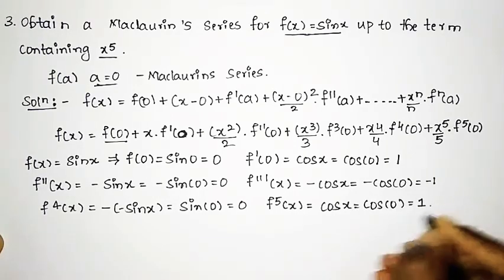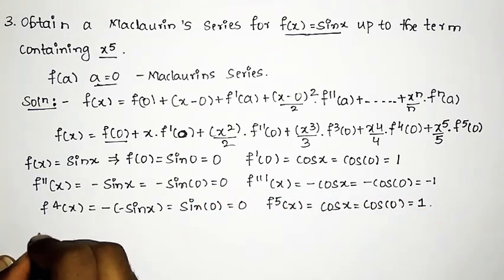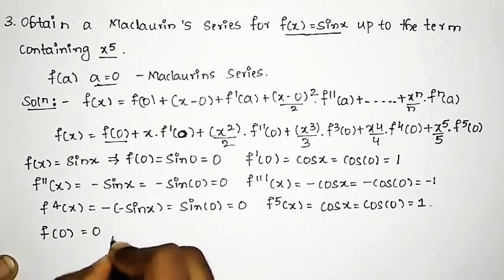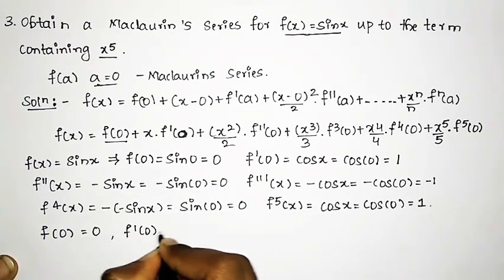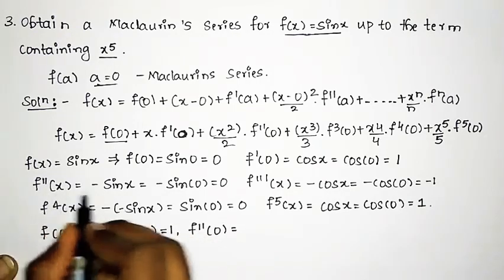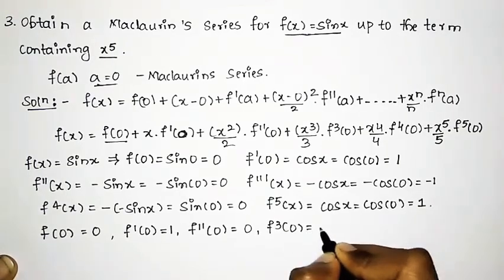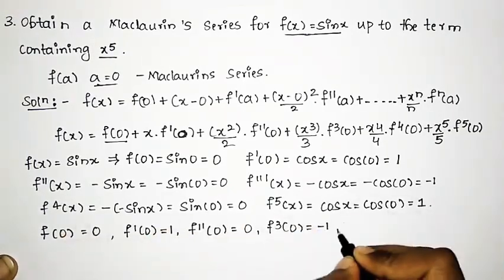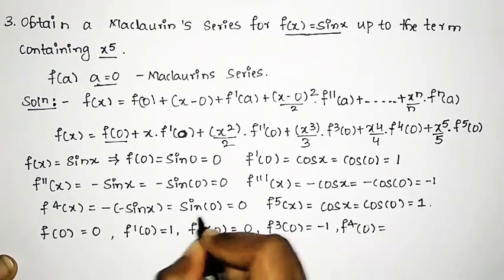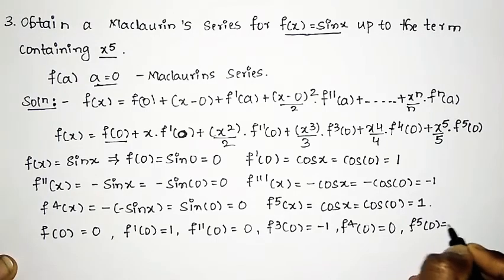So summarizing all the values: f(0) = 0, f'(0) = 1, f''(0) = 0, f'''(0) = minus 1, f''''(0) = 0, and f'''''(0) = 1.